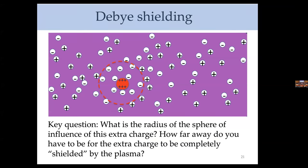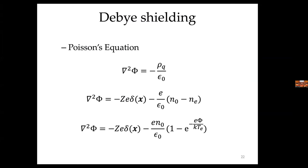Many negative charges are going to accumulate around the positive test charge because it attracts them. The key question the Debye length concept addresses is: what is the radius of this sphere of influence? How far away do you have to be for the extra charge to be completely shielded by the plasma? To understand this, we use the Poisson equation to calculate the electrostatic potential due to the excess charge in that region.